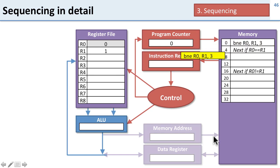Here's our instruction. We load it into the instruction register and decode it. To decode it, the ALU decides if R0 and R1 are equal by performing a subtraction. It subtracts R0 and R1 to find out if they're equal.